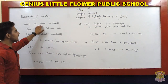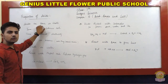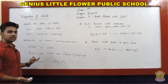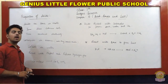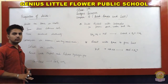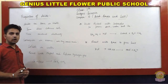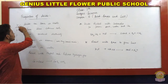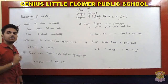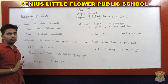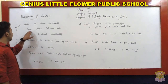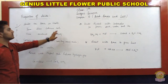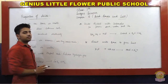The first property is: acids are sour in taste. As you all know, we discussed in the previous lecture that acid is sour - khatta - in taste. So acids are sour in taste. This is the first property of acids.